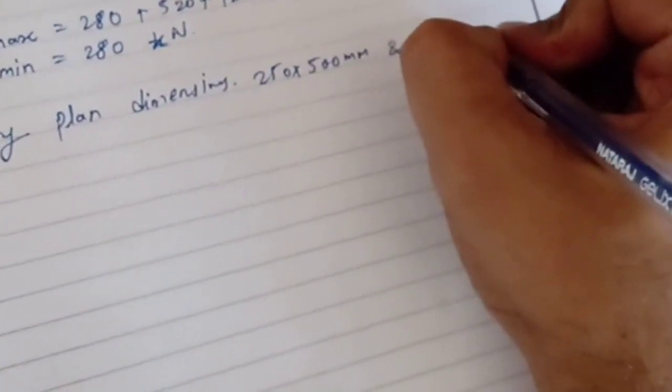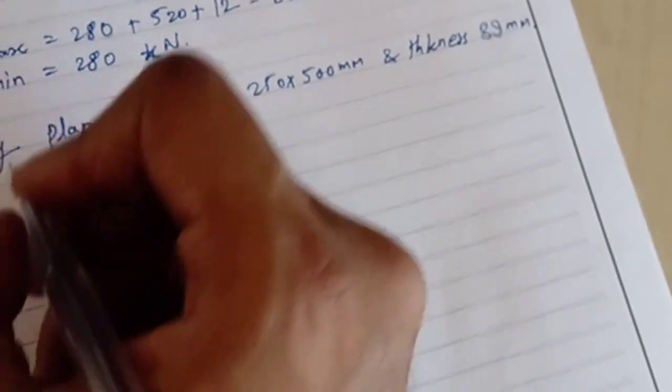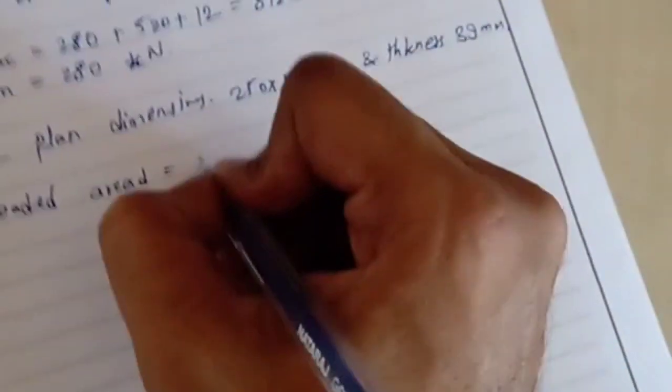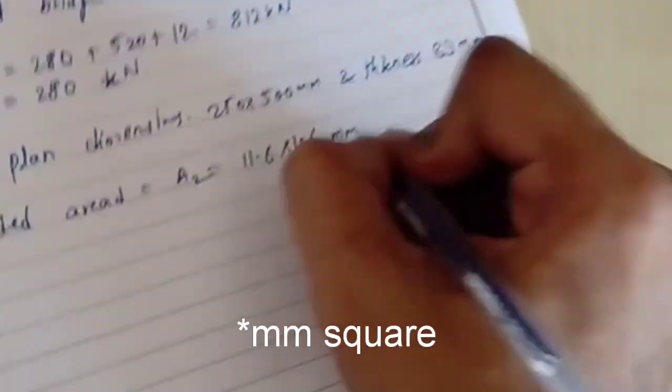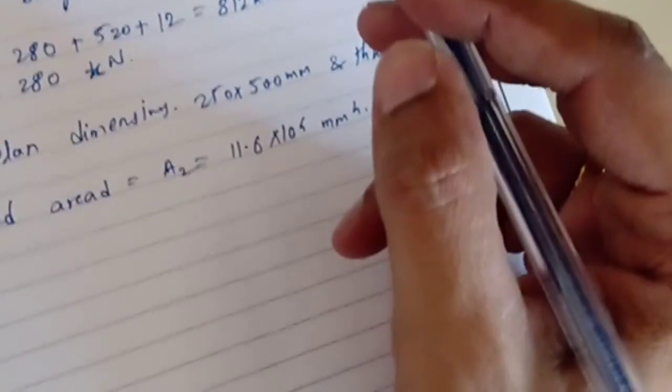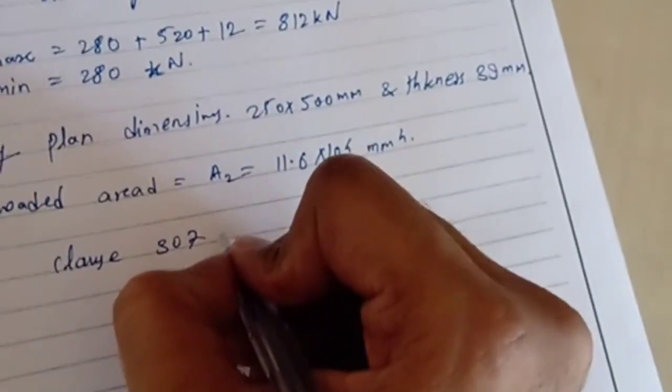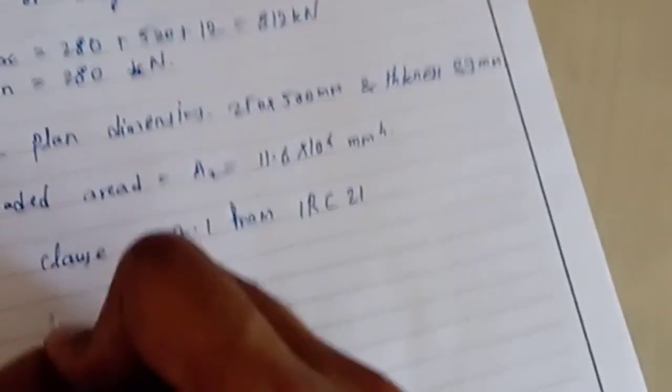250 by 500 mm and thickness 39 mm. So the loaded area, that is a2, the normal load will be 11.6 x 10^4 mm square, which is given in that particular table. According to clause 307.1 from IRC 21, allowable contact pressure...